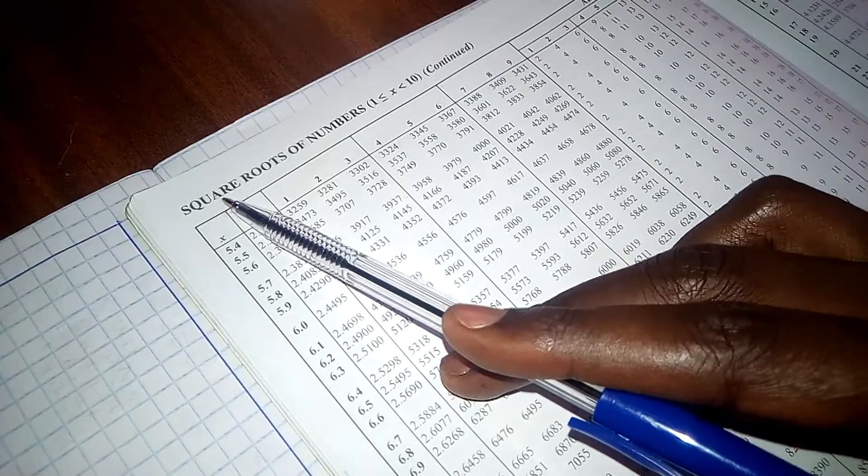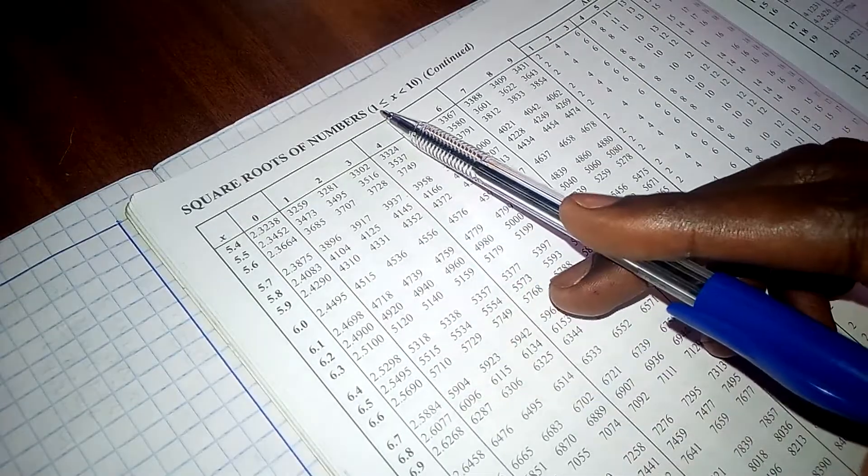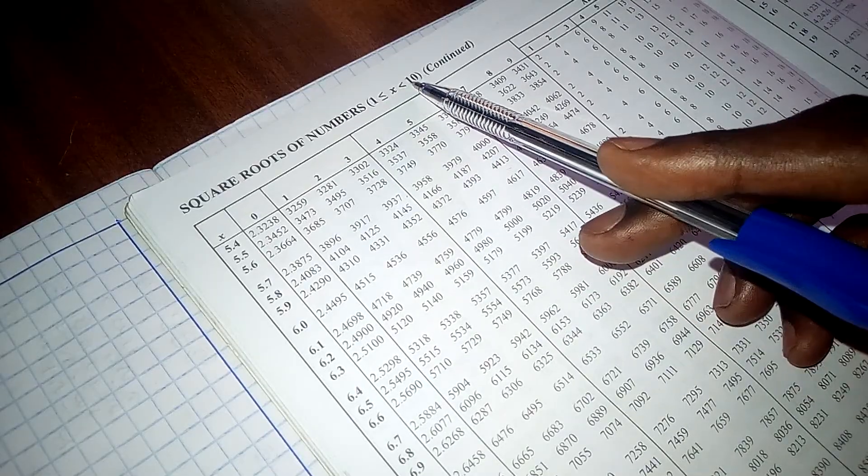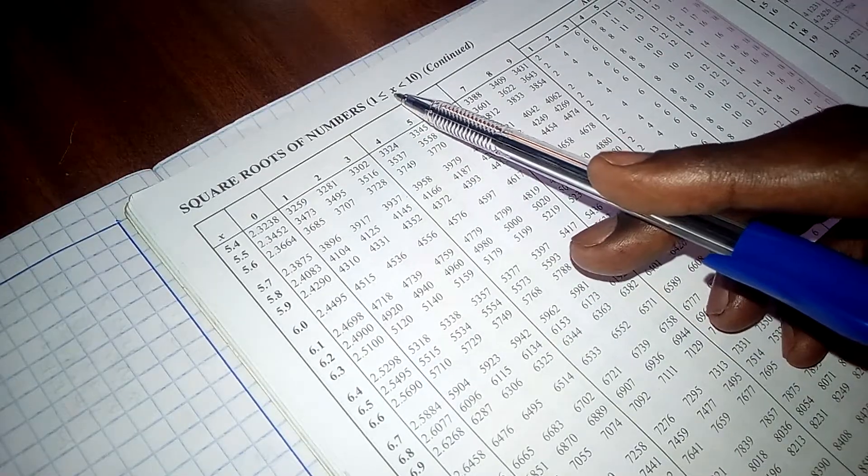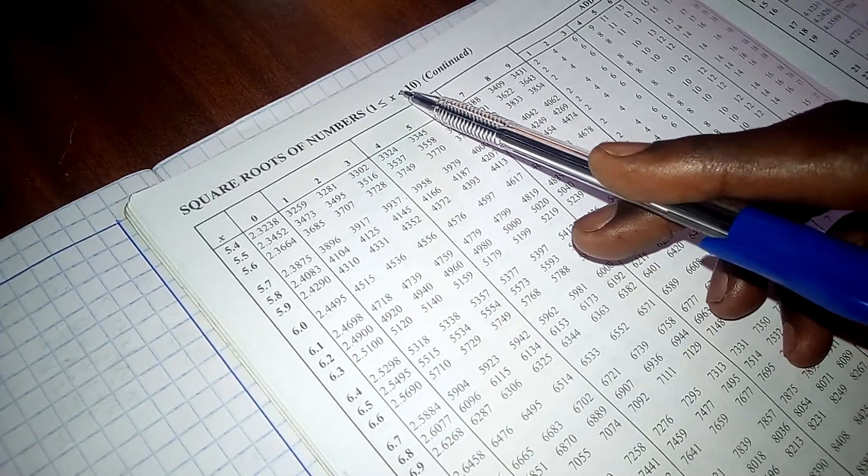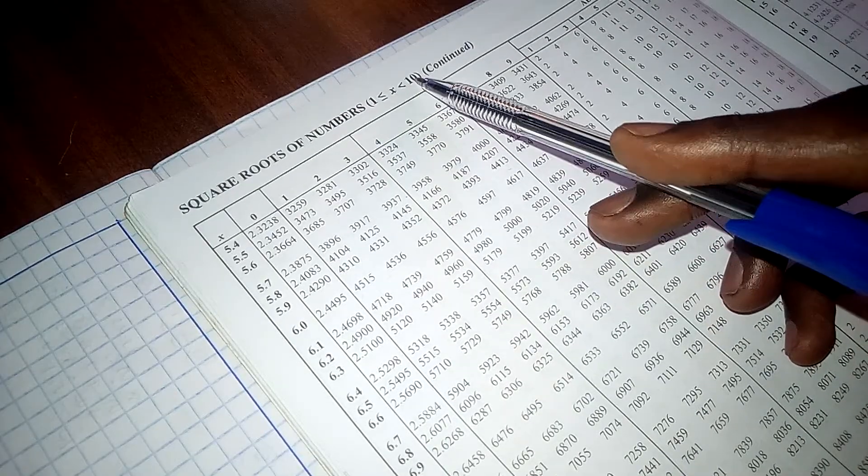So as you can see here, this is square roots of numbers and these numbers lie between 1 and 10, meaning this is the range between 1 and 9.9 because this is less than, so it's not actually 10, it's 9.9.